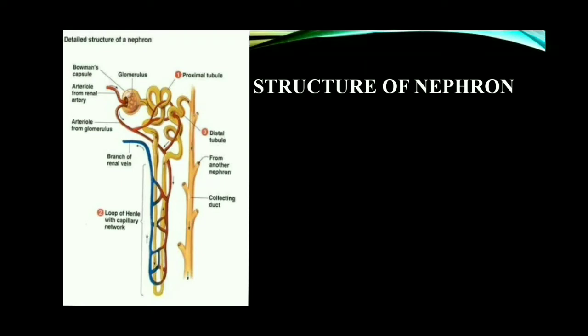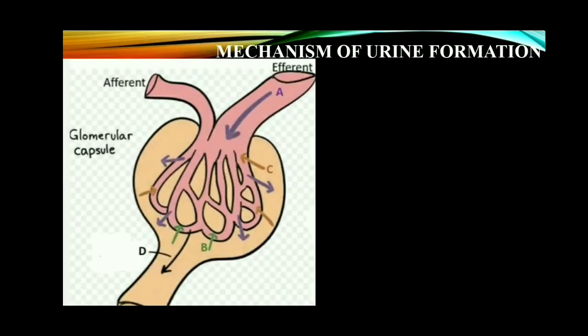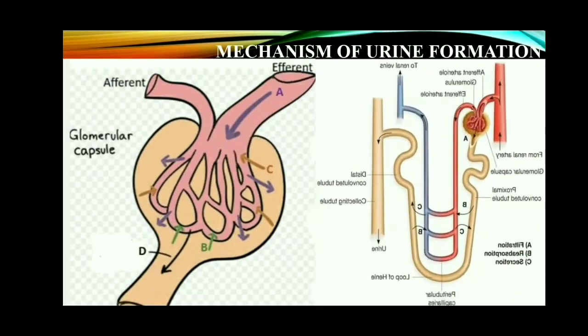This is the structure of nephron. The renal tubule consists of three parts: proximal convoluted tubule, distal convoluted tubule, and loop of Henle. Now let us study the mechanism of urine formation. The process of urine formation takes place in the nephron. It occurs in three stages: glomerular filtration, tubular reabsorption, and tubular secretion.